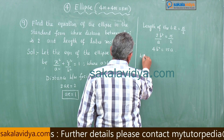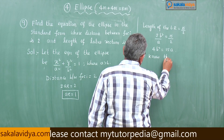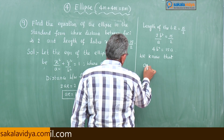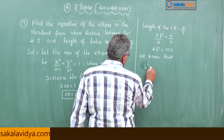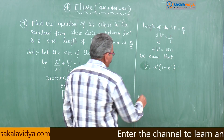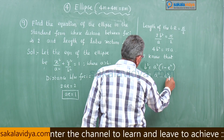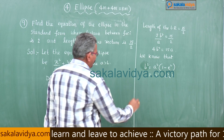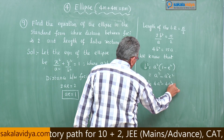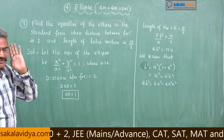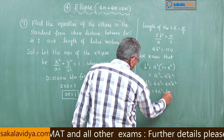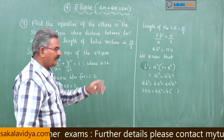We know that b squared is equal to a squared into 1 minus e squared. Substituting: a squared minus a squared e squared. Multiplying 4 on both sides: 4b squared is equal to 4a squared minus 4a squared e squared. Now substituting the values: 4b squared means 15a, and since ae is 1, a squared e squared is also 1.